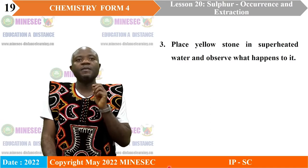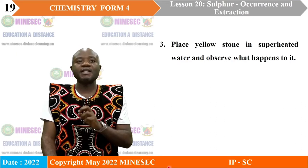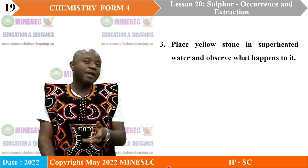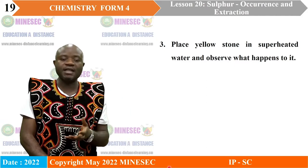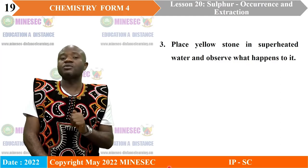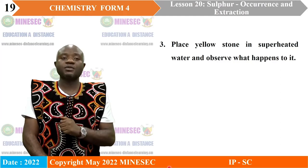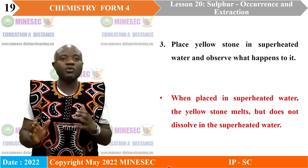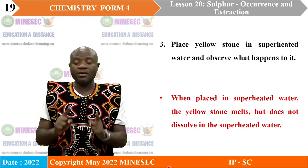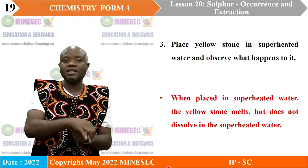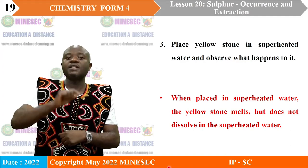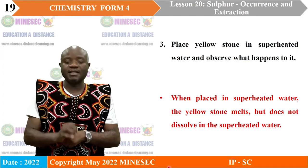Activity three: Place yellowstone in superheated water and observe what happens. Superheated water is water that exists as a liquid at temperatures above 100 degrees Celsius. When yellowstone is placed in superheated water, it melts — that means it becomes a liquid — but at the same time, it does not dissolve in the superheated water.